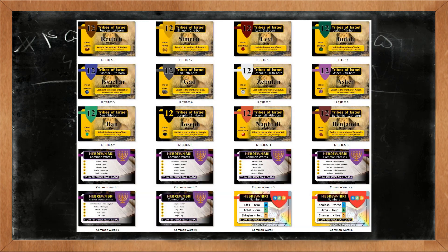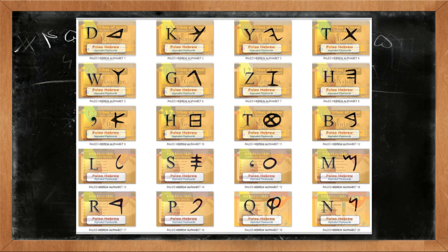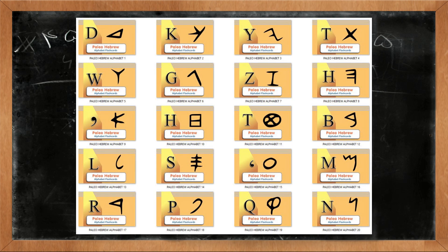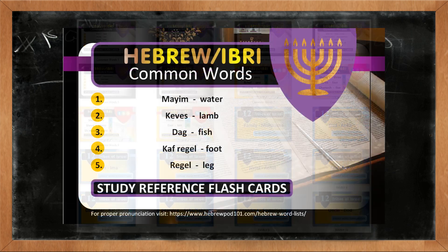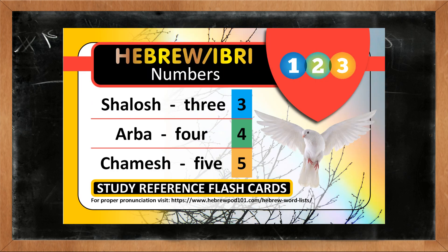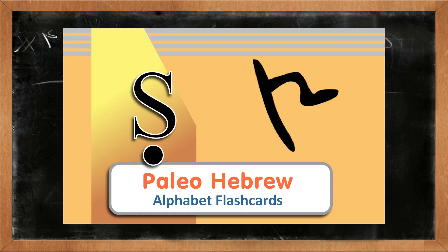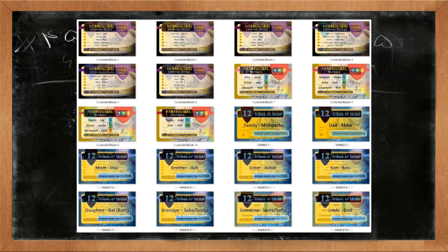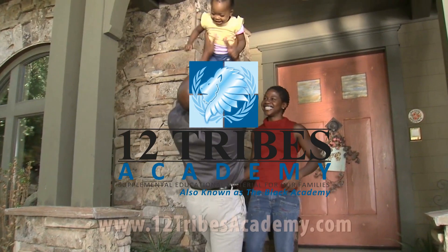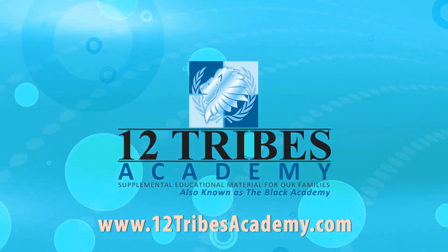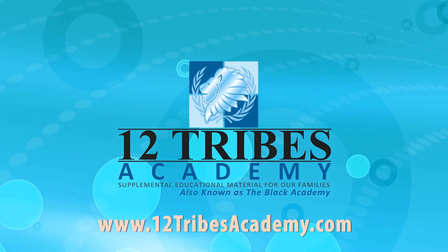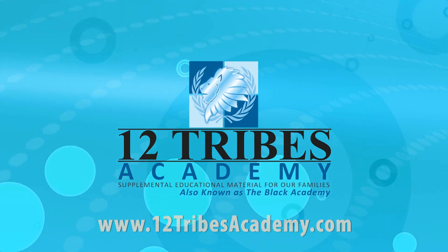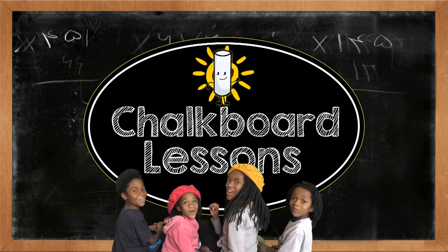We have redesigned our flashcards, which are an exact duplicate of what is seen on your screen. These full color flashcards, along with the common Hebrew or ivory word cards, the Hebrew kinship cards, and the Paleo-Hebrew alphabet cards, can be ordered at the link below or by visiting our website at www.12tribesacademy.com. Thanks for watching. It's all for a lesson!